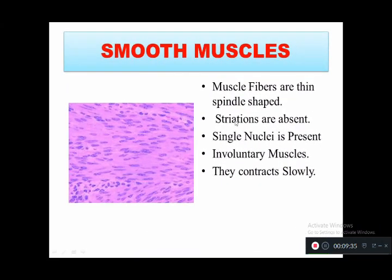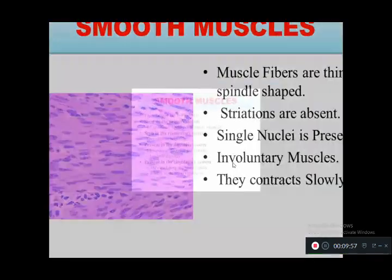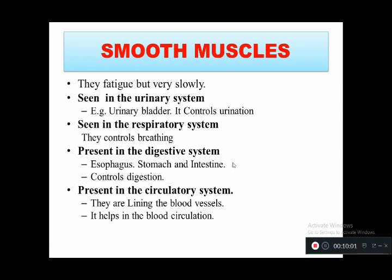Smooth muscles do not have striations, have a single nucleus, and are spindle-shaped fibers. They contract very slowly and are involuntary. Functions include controlling urination in the urinary system, controlling breathing in the respiratory system, controlling digestion in the esophagus, stomach and intestine, and helping blood circulation as the lining of blood vessels in the circulatory system.